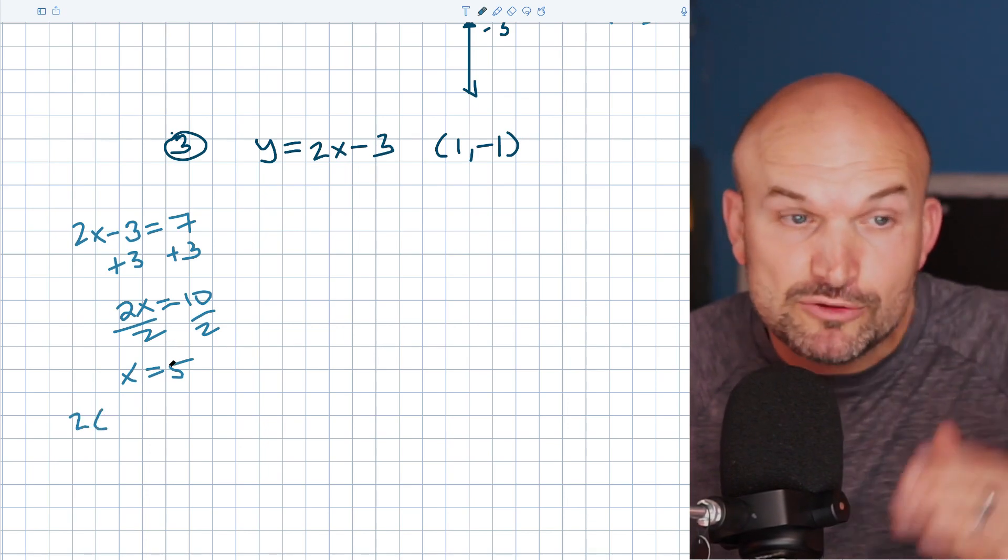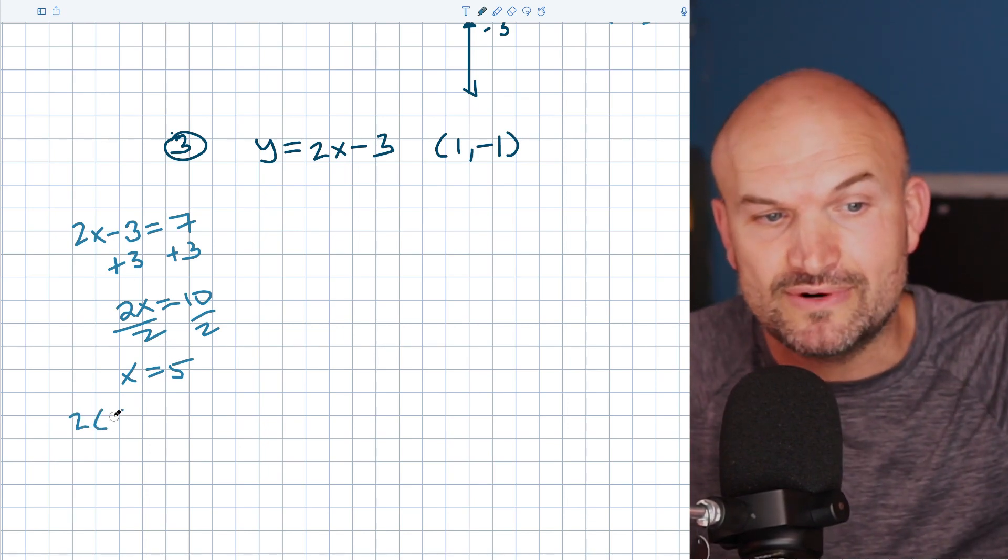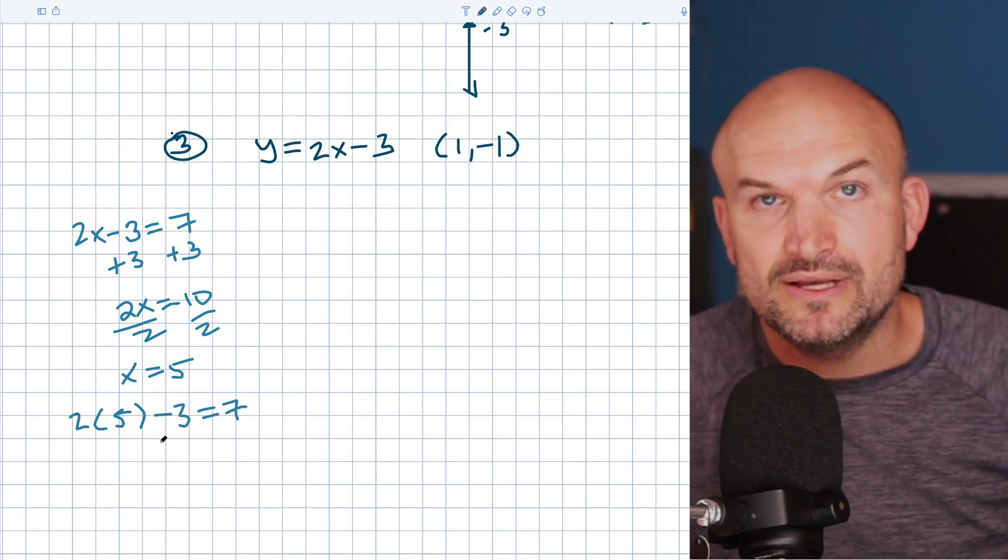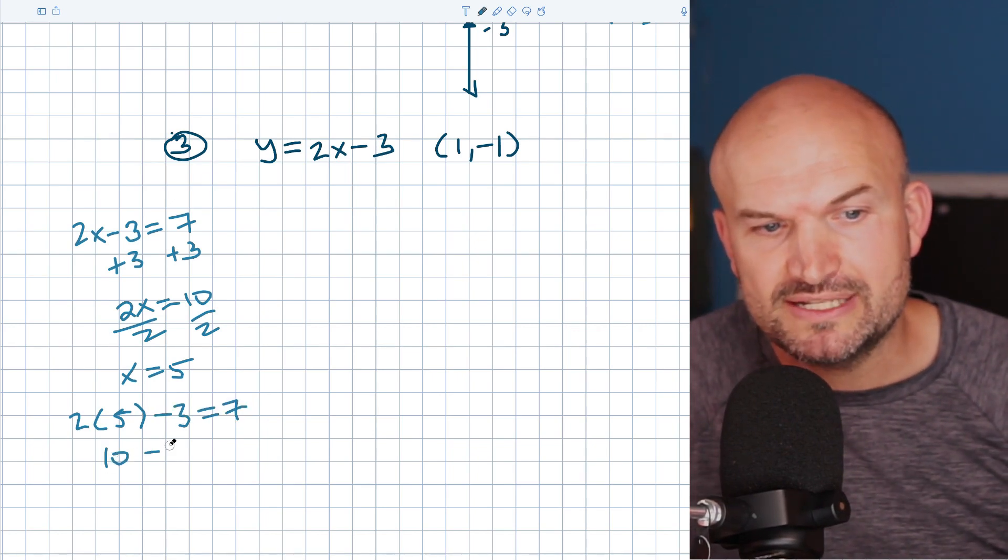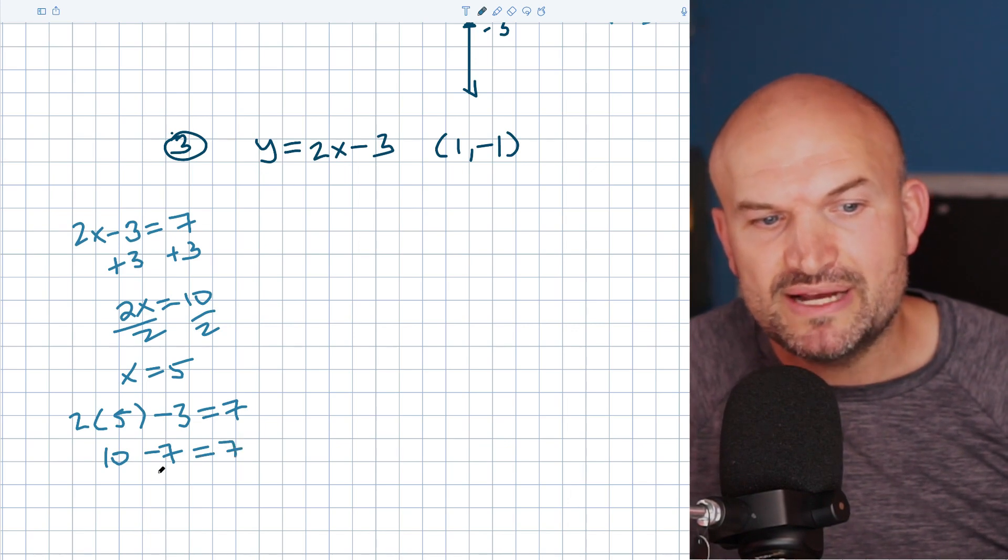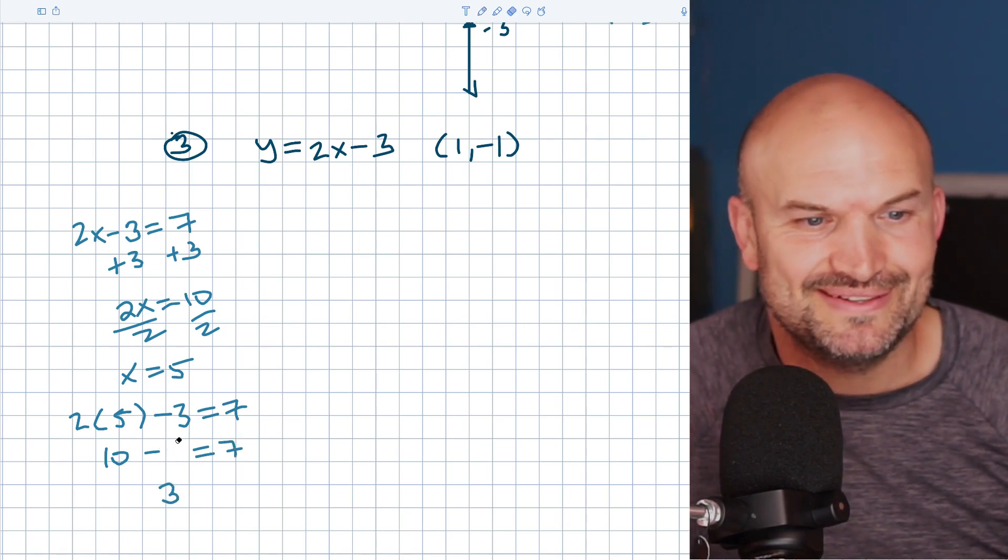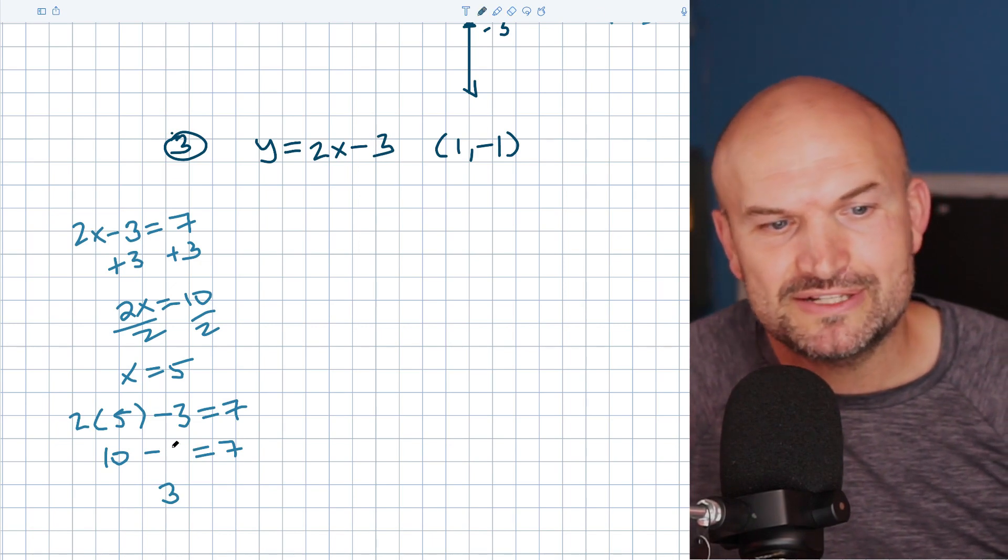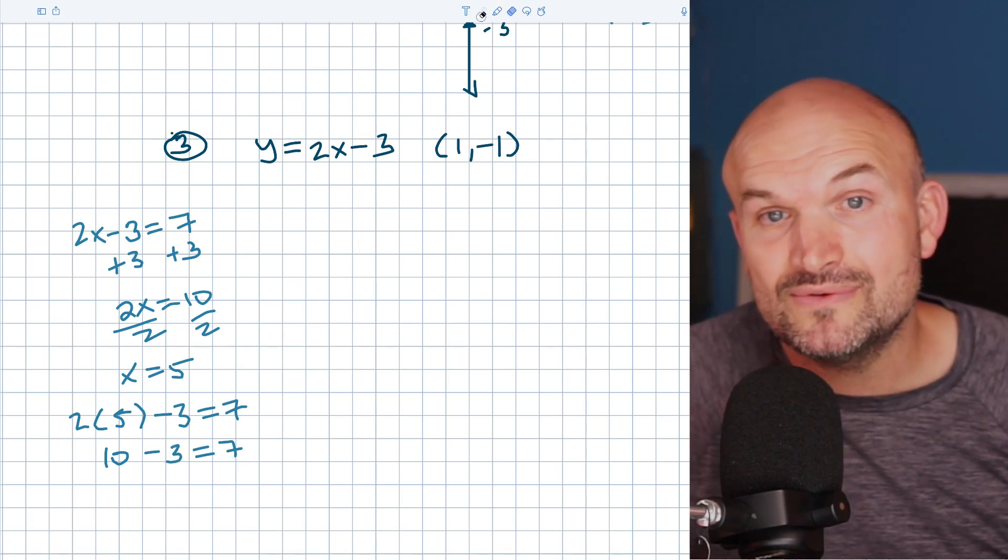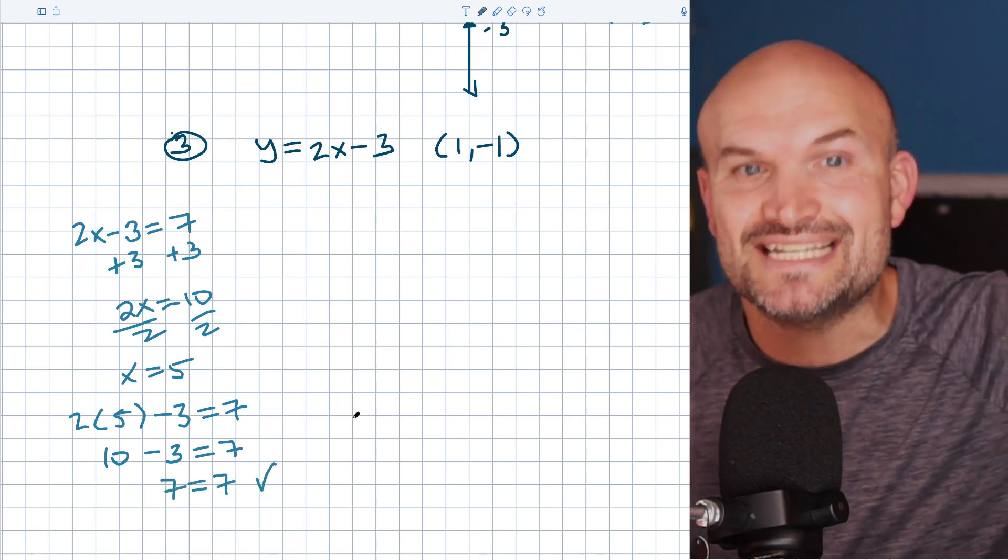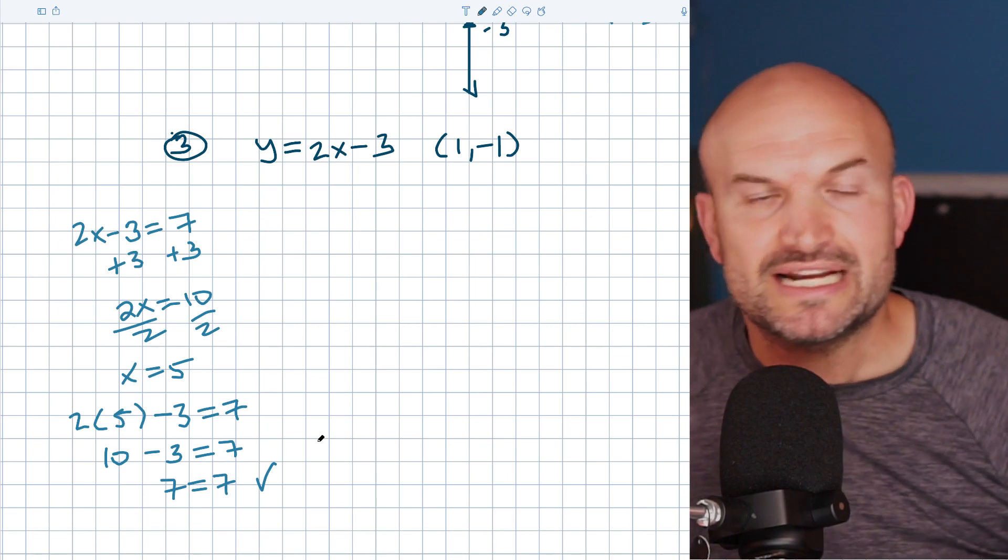And so what you did is you took your five and you plugged it in for the x, right? It's your variable. So we had two times five minus three is equal to seven. Then you went ahead and simplified this. So 10 minus three is going to equal seven. And you can see now seven equals seven, which means that my answer was correct. That is now satisfied. So that's what we mean by satisfying.